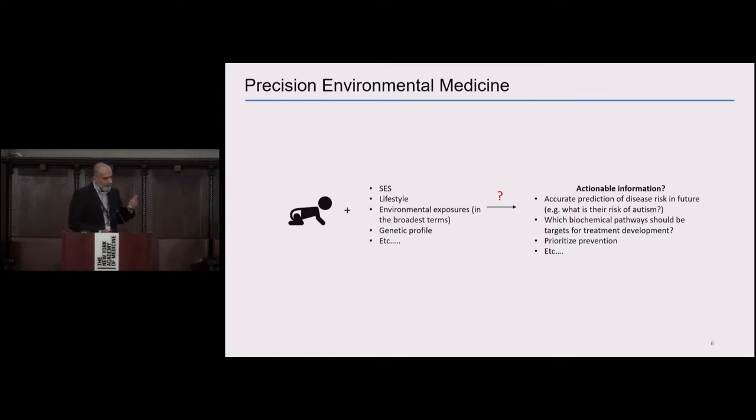By some estimates, we've spent over a billion dollars studying the genomics of autism. And for a newborn child, if we did all the genomic scans, we have very little predictability of whether they will develop autism or ADHD or schizophrenia or many other conditions. We are missing a crucial opportunity to prevent diseases, reduce their severity, find new biological pathways to develop new treatments.